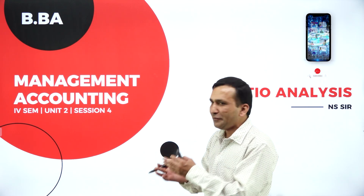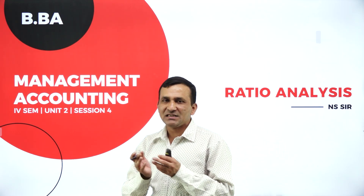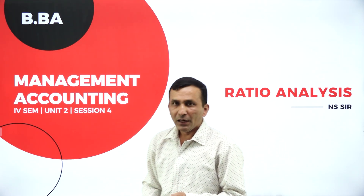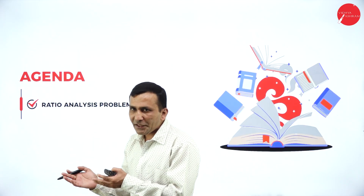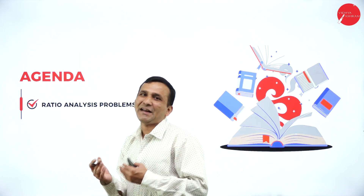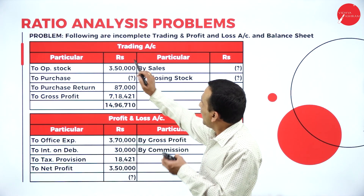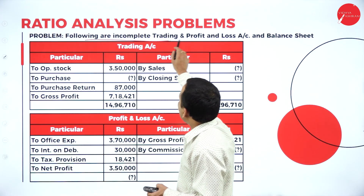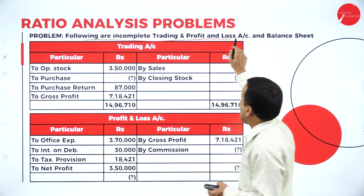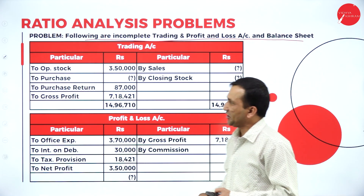In the previous session, we covered problems related to ratio analysis. Today my agenda is a continuation problem on different types of ratio analysis problems. Here, the question involves the following incomplete trading and P&L account and balance sheet.